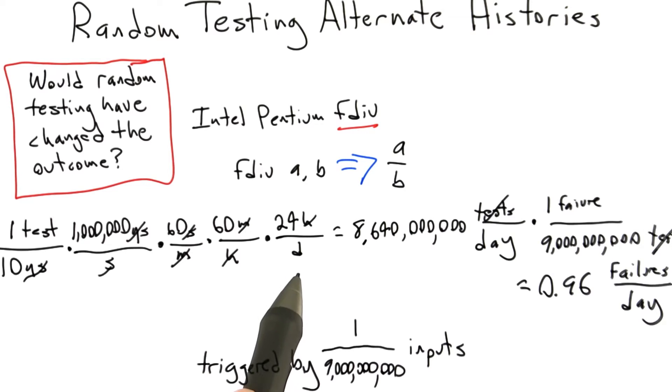And so now, this kind of testing is going to need some sort of an oracle. So we're going to need a way to tell if a particular output from fdiv is correct or not.